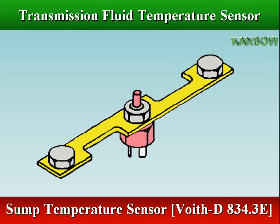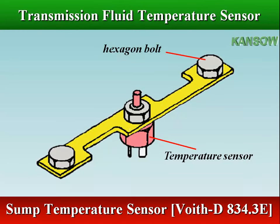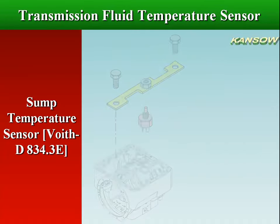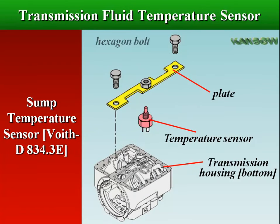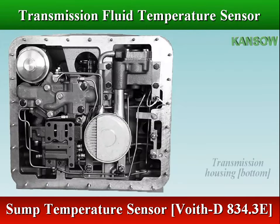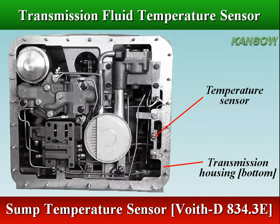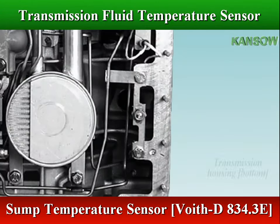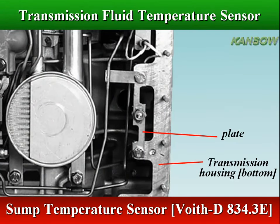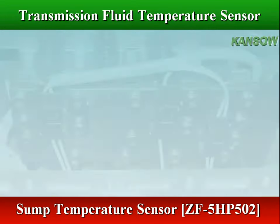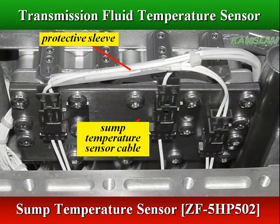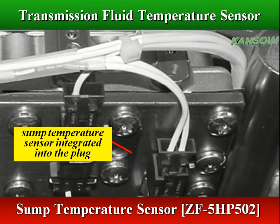In Voith-Diwa-3 transmissions, the sump temperature sensor is mounted in a plate bolted to the bottom of the transmission housing. In ZF Ecomat II transmissions, the sump temperature sensor is mounted in the valve body, integrated into the plug.